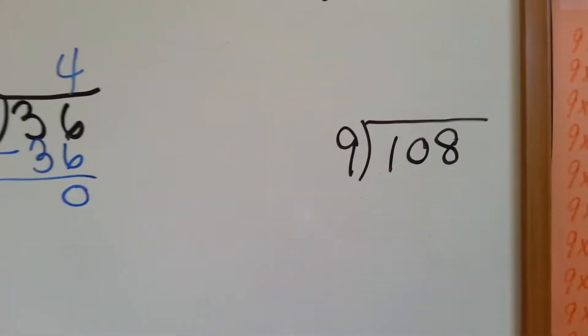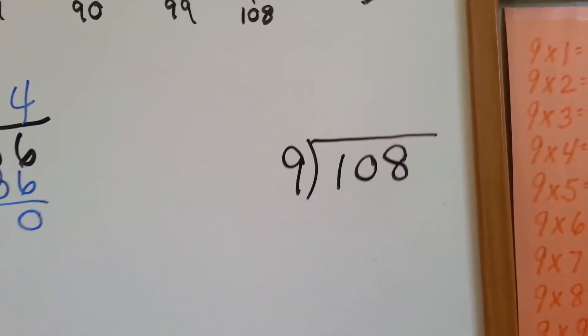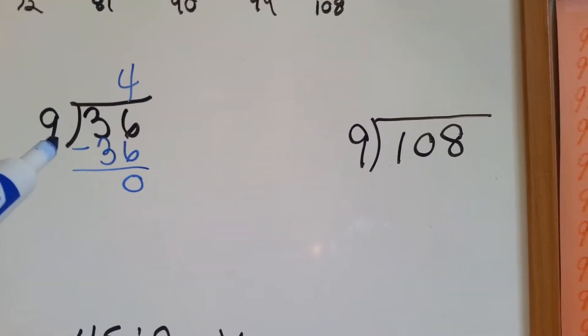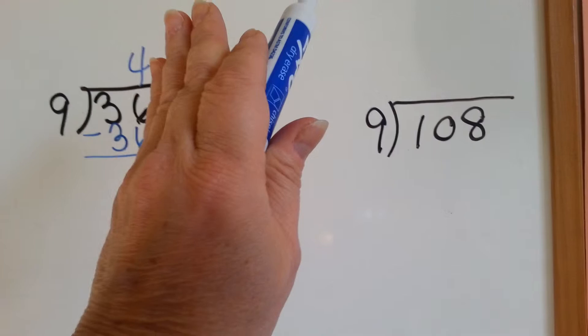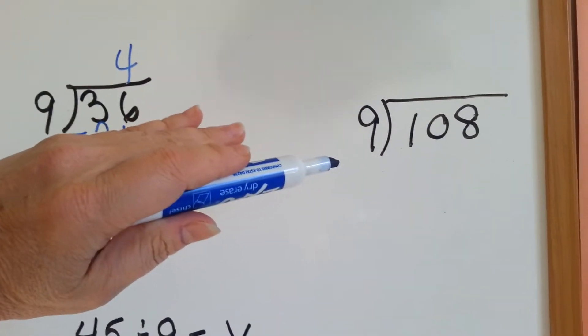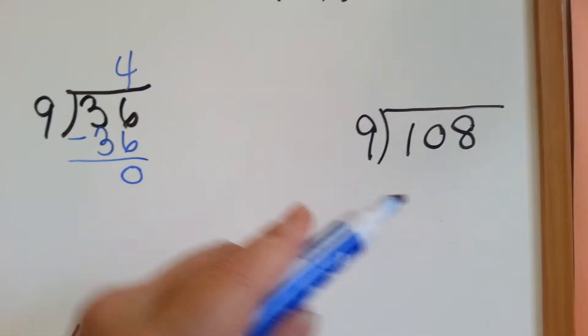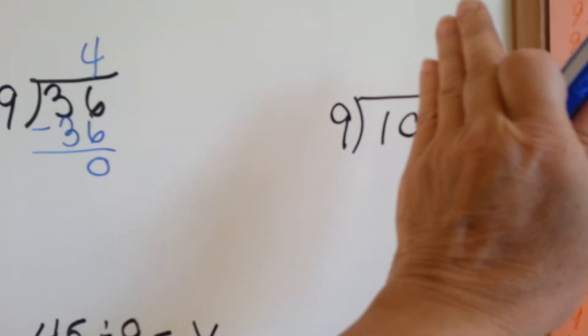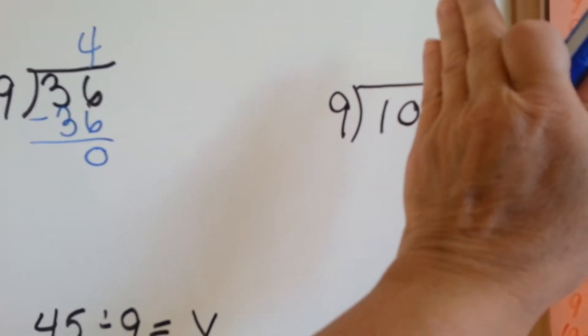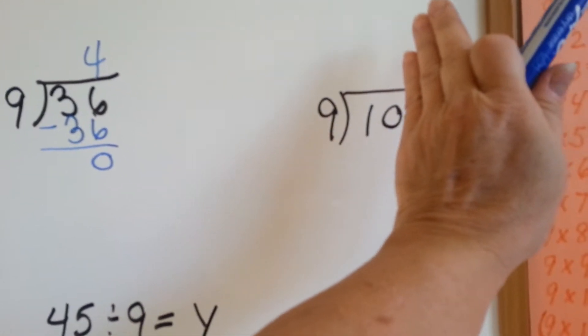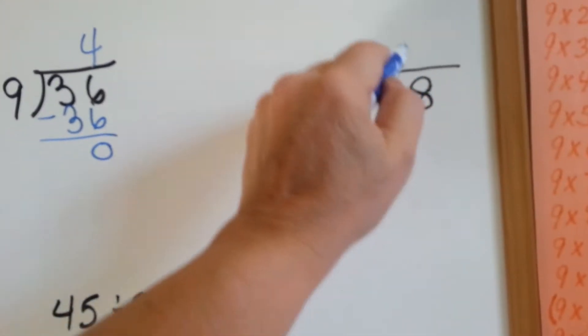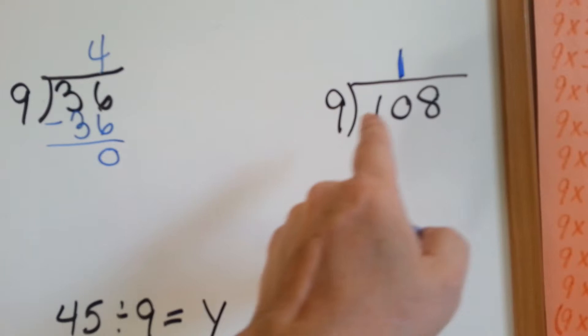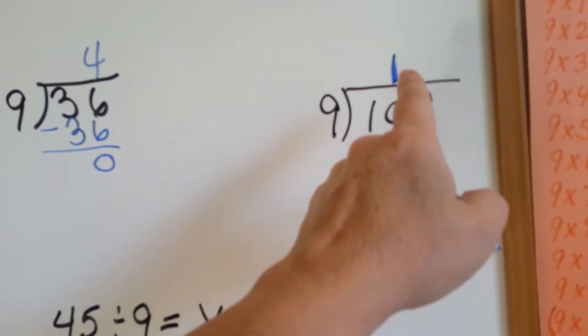Let's do a different kind of long division problem where it keeps going. Now in all these other ones, we put the 9 into both numbers because we couldn't put 9 into 3. We had to put it into the 3 and the 6, 36. Now we say can 9 go into 1? No. Can 9 go into 10? Yes. How many 9s can you fit in a 10? You can fit 1. We're not going into 108. We're going into 10.